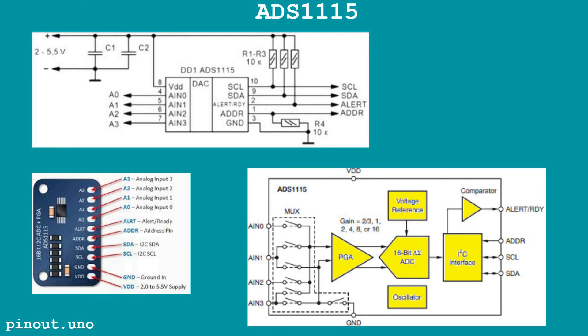Applications of the ADS1115 include temperature, pressure, pH, and resistive sensor measurements — great for weather stations and chemical analyzers. Strain gauge signal measurement is useful in weight scales and load monitoring systems. Battery and power source analysis enables precise voltage monitoring. Audio signal analysis can measure low-voltage audio signals due to its high precision and speed. Its low power consumption also makes it a great choice for battery-powered autonomous devices.